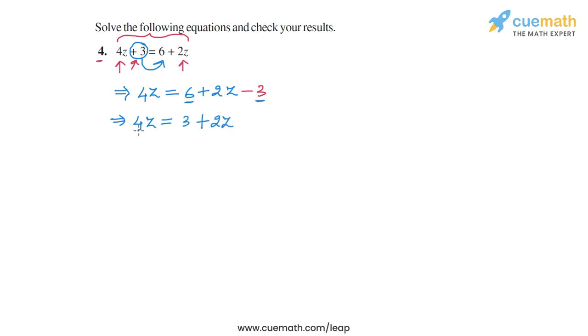Now, we have this variable term 4z and we have this variable term 2z. So let's combine them by taking this plus 2z term and transposing it to the left hand side.